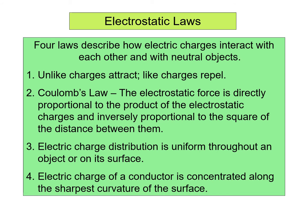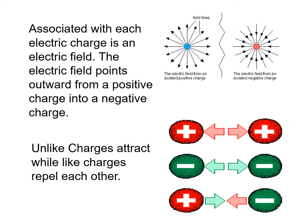Associated with each electric charge is an electric field. The electric field points outward from a positive charge and into a negative charge. Looking at the diagram, the field lines around a positive charge point outward, while the field lines around a negative charge point inward. This is why unlike charges attract while like charges repel — two positive charges repel, two negative charges repel, but a positive and a negative attract.